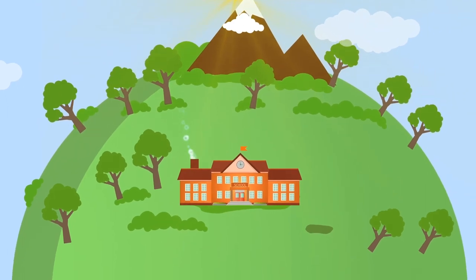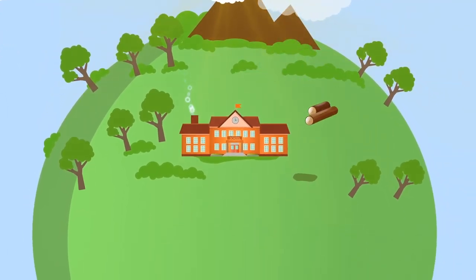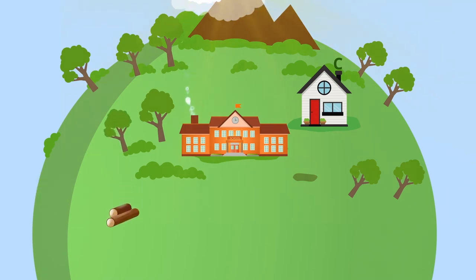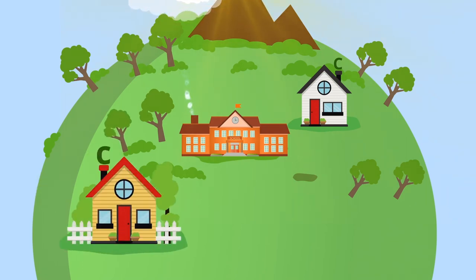But consider this. When a tree's wood is used for buildings, the tree's carbon remains stored, removing carbon dioxide from the atmosphere.